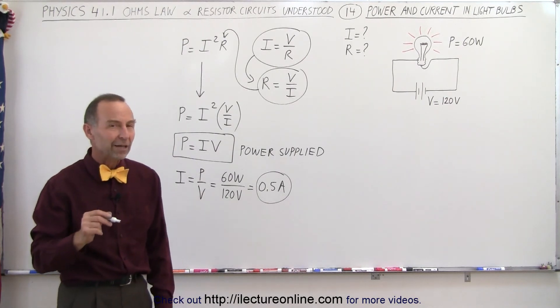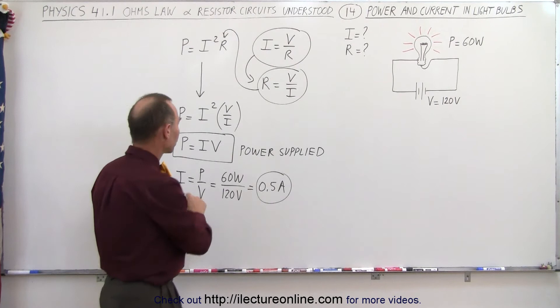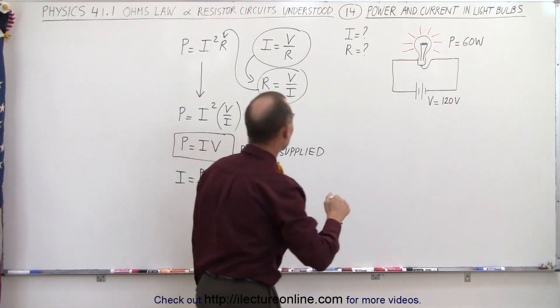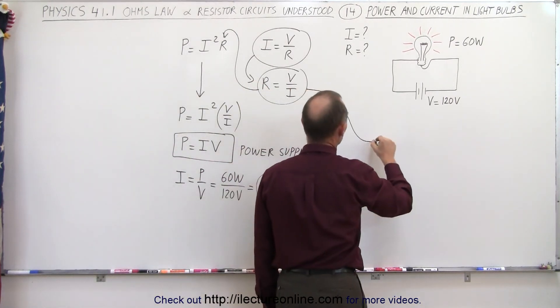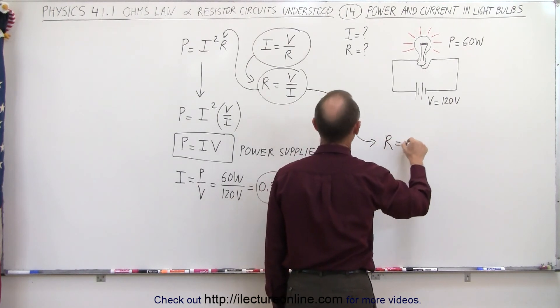Now we're ready to find the resistance because once we know the current and the voltage we can use Ohm's law to find the resistance. So now using this equation here we can say R is equal to V divided by I.